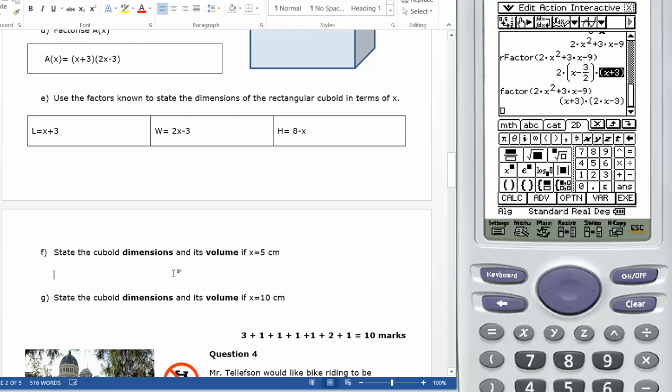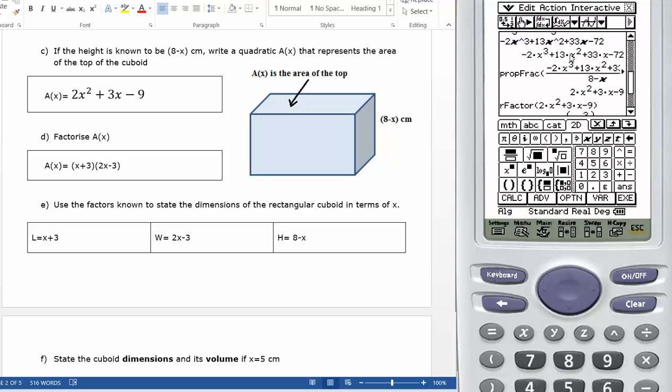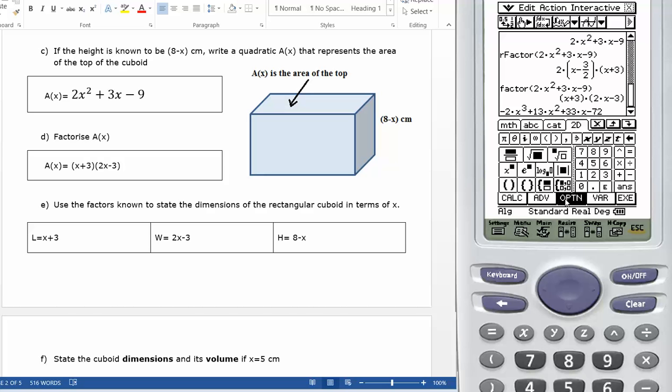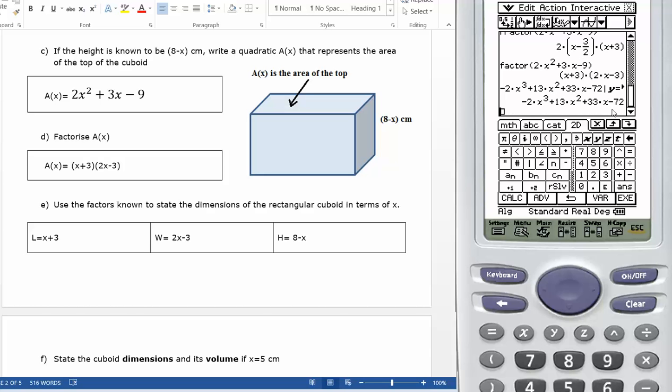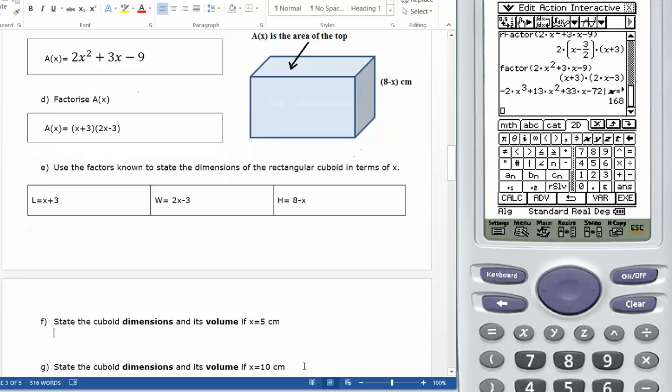State the cuboid dimensions and its volume if x equals 5. If I go back over here and get the volume expression. That's the volume expression. Copy down here. Paste and option given x equals 5. And the volume equals, x equals 5, and then the volume equals 168.